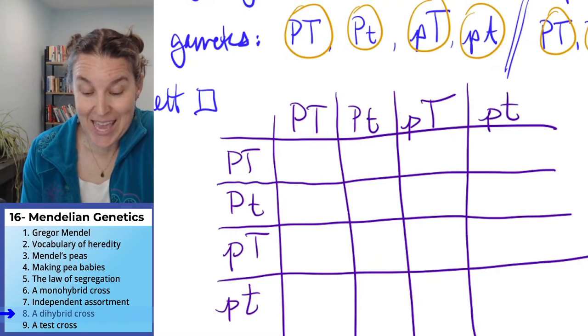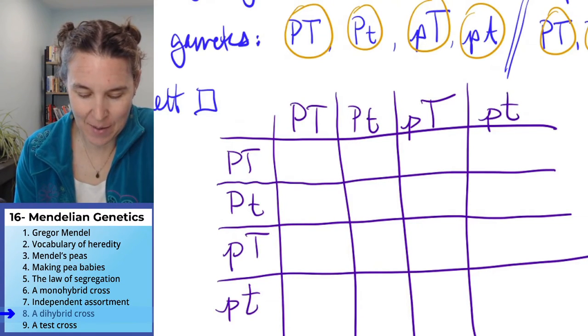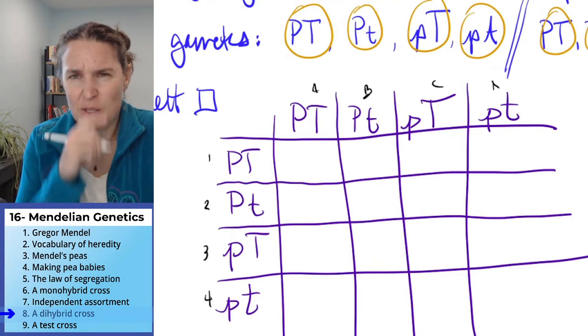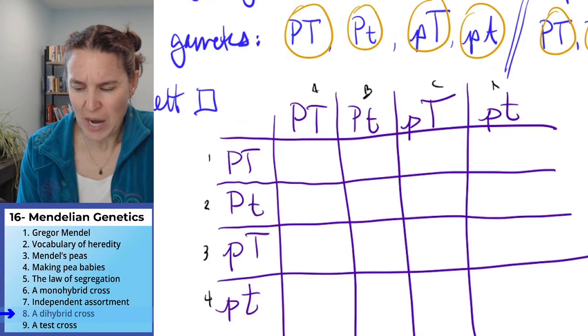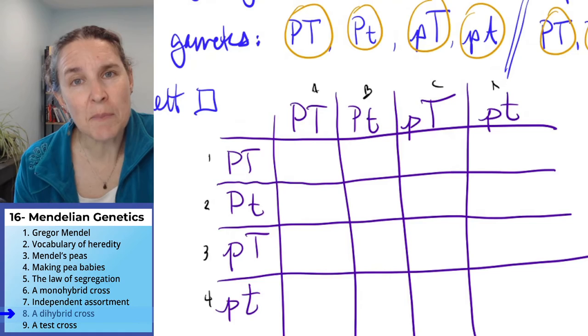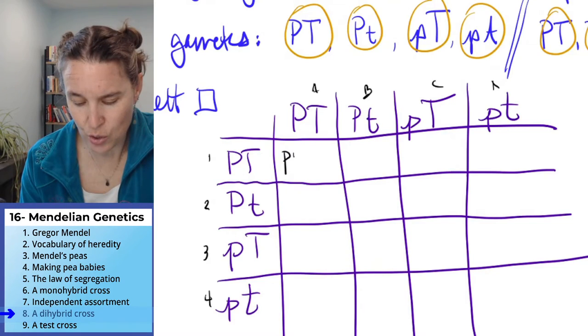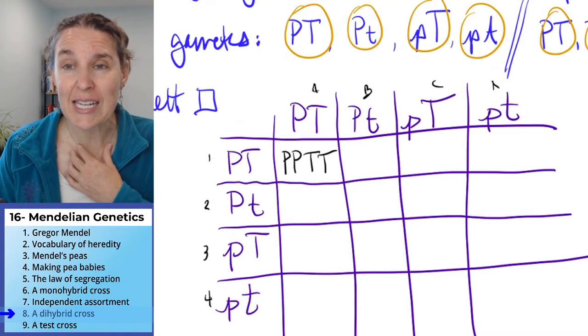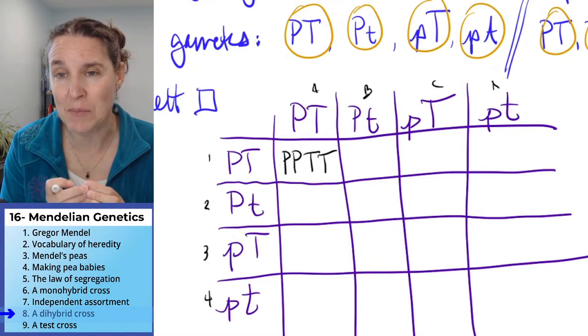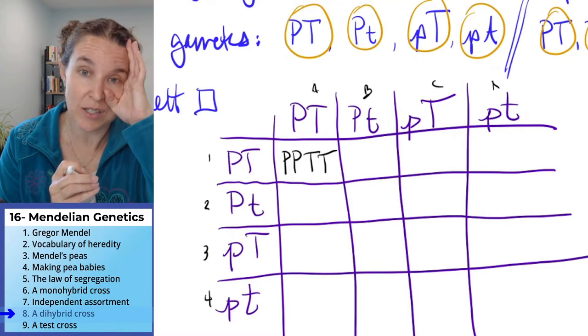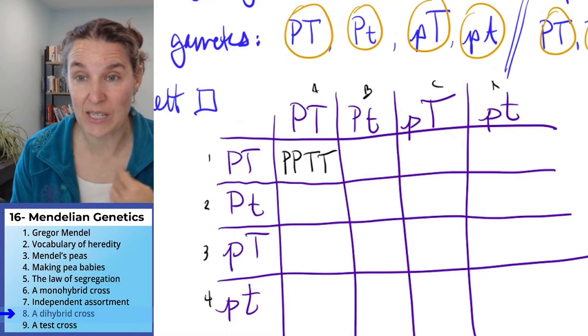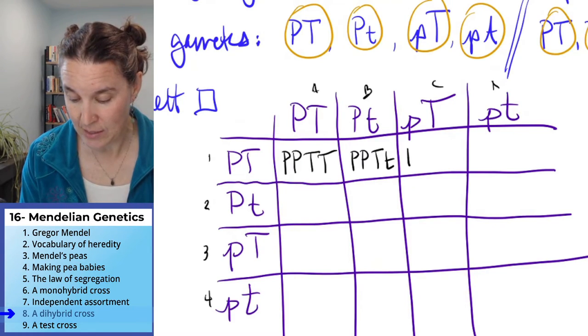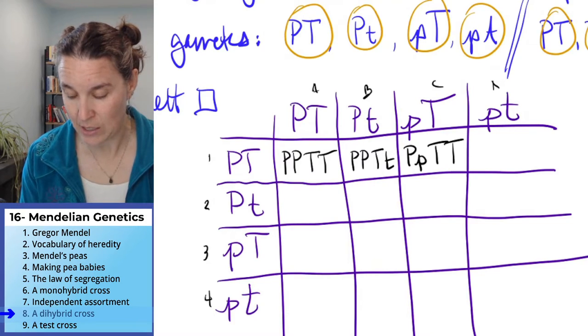Now, I'm going to do all the possibilities. If I combine gamete one, two, three, and four, A, B, C, and D. Do you see how I'm just trying to give you some way to track what my crazy brain is doing? I'm going to combine the first two gametes, and I'm going to get two big P's and two big T's. You can combine those letters however you want. I personally need them to be in a methodical order.